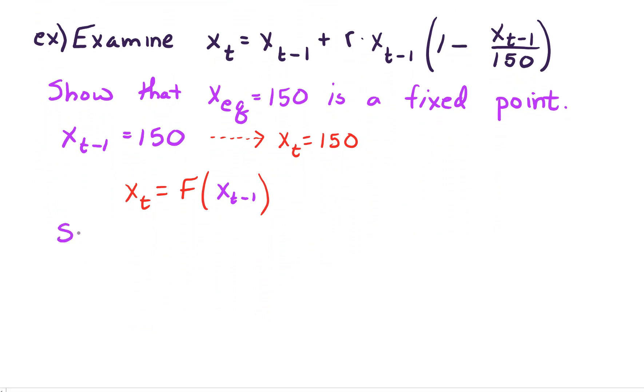Well, let's suppose x sub t minus 1 equals 150 and let's plug that into our model. On the left hand side we have x sub t. On the right hand side we have x sub t minus 1 which is 150 plus r times x sub t minus 1 which is 150, 1 minus 150 divided by 150. Okay, simplifying, let's see we get 150 over 150, that just turns out to be 1 and 1 minus 1, this whole quantity turns out to be 0.